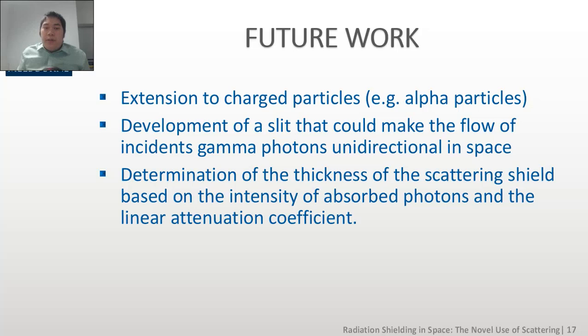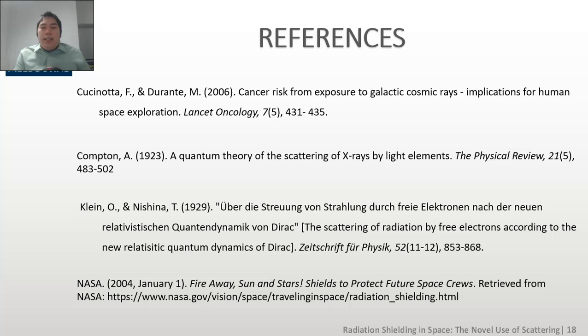In terms of future work, only neutral particles such as gamma rays and X-rays have been considered in this experiment. No work has actually been done for alpha particles, which are charged particles that can also give secondary reactions to the shield. Second work to be done in the future is we should develop a slate that would actually help develop a monochromatic X-ray that will make the incident flow of gamma radiation in a new direction in space. Lastly, the determination of the thickness and length of the scattering object needs to be done in terms of its linear attenuation factor and the intensity of photons absorbed.